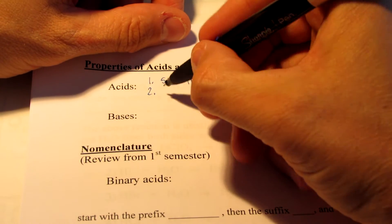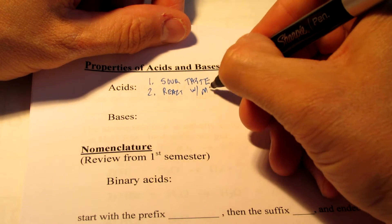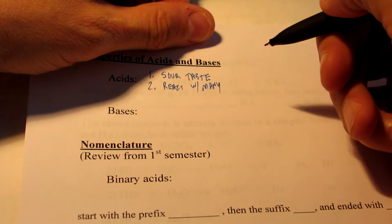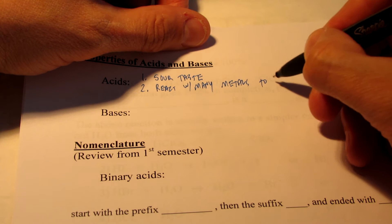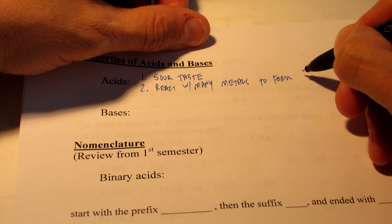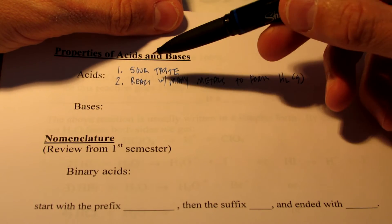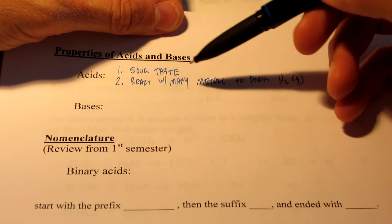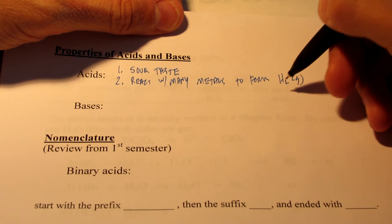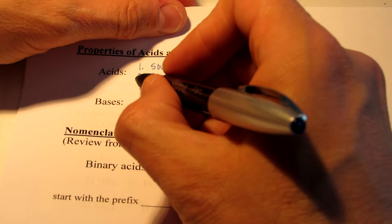Number two, acids can react with many metals, and we usually call them the active metals, but I'm just going to say many metals for right now, to form hydrogen gas. If acids are reacting with metals, oftentimes we produce hydrogen gas in the process. And that's a property of many acids.